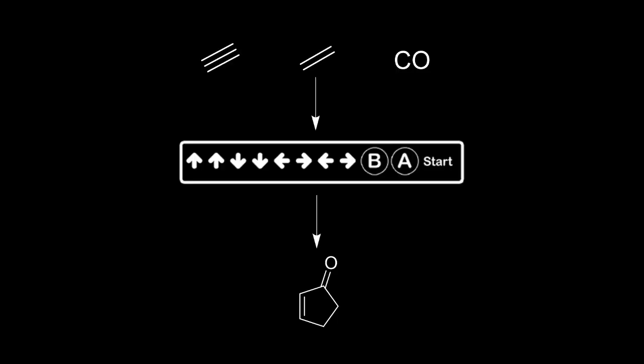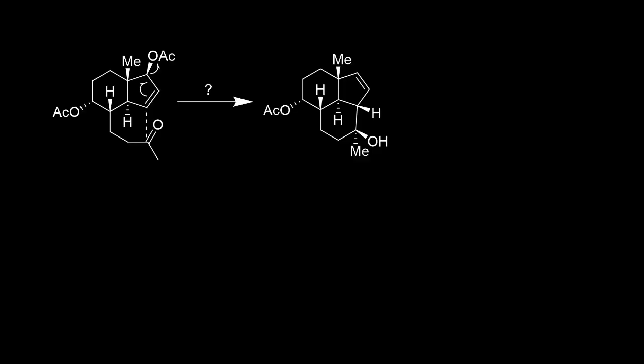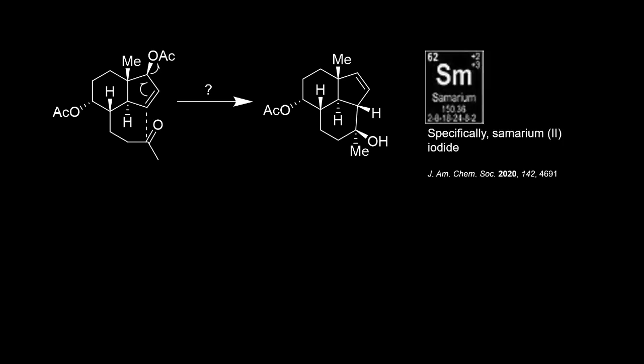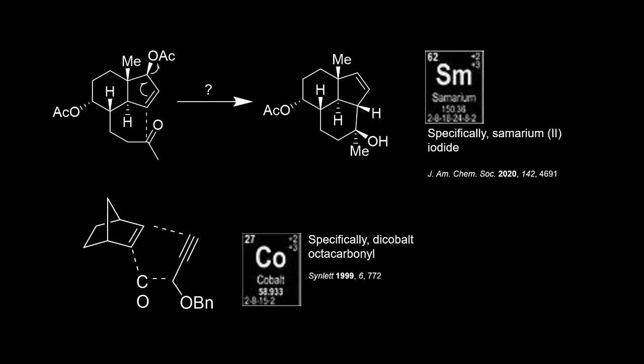Organometallics — the cheat codes of organic chemistry and the best kept secret from first semester orgo students. Given how much power these reactions carry, that's probably with good reason. Need to make this bond with this specific stereochemistry while shifting this alkene? There's a medal for that. Need to make these three bonds in one go? There's also a medal for that.